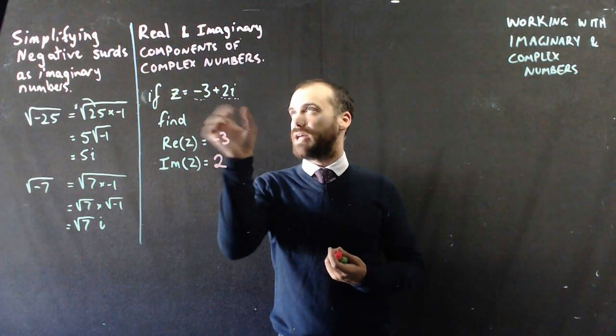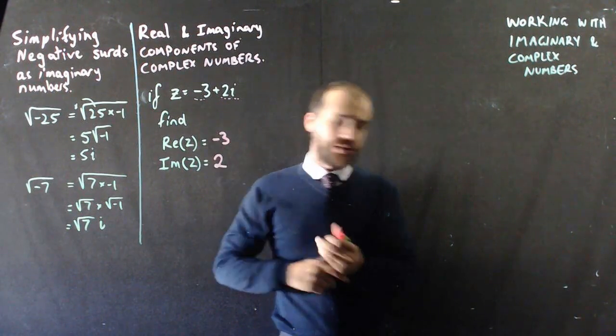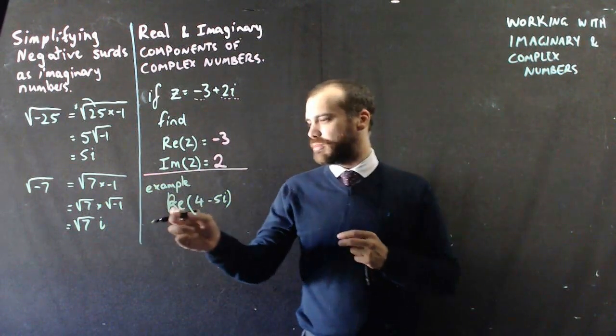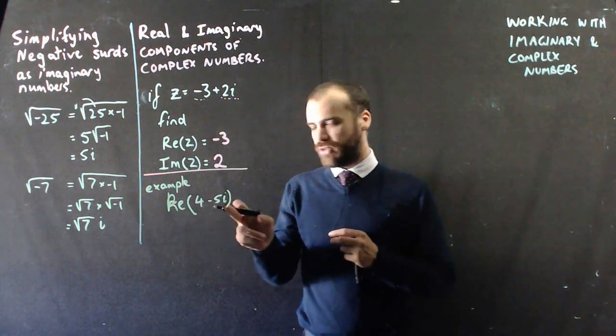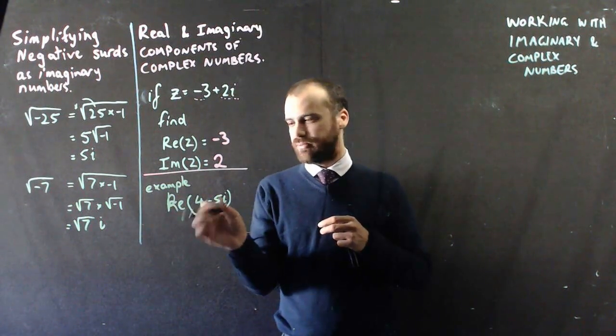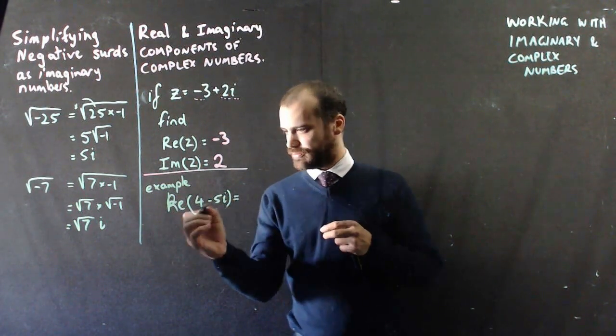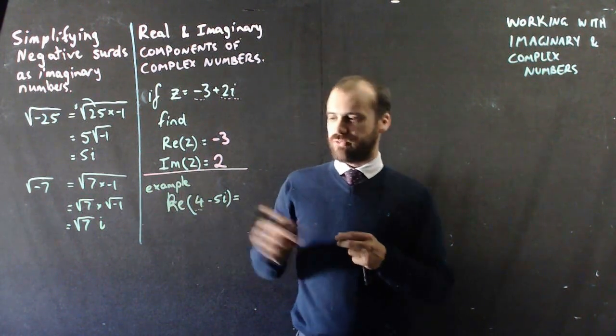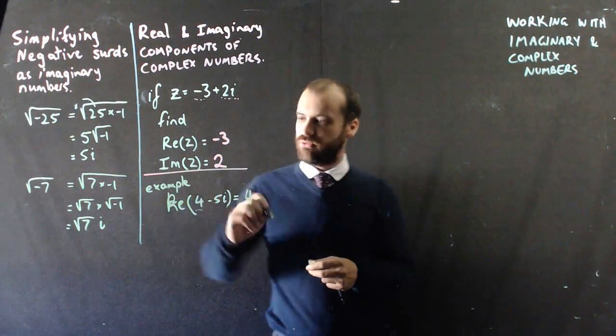Just really quickly, another way to write that: capital R. Another way to write that would be capital RE, 4 minus 5i. That says tell me the real component of that. The real component of that, that's the real number, that's the imaginary number, so Re(4 - 5i) is just 4.